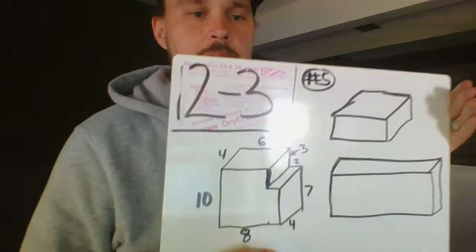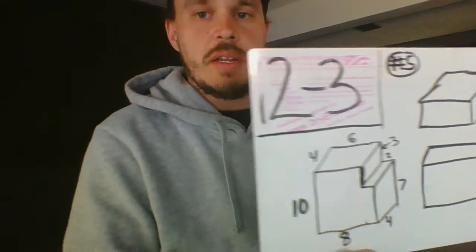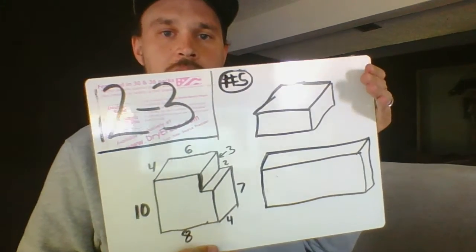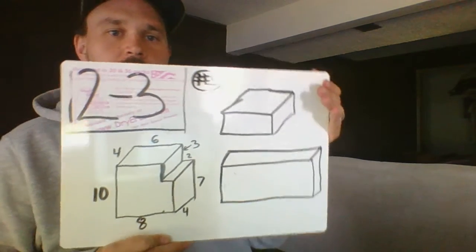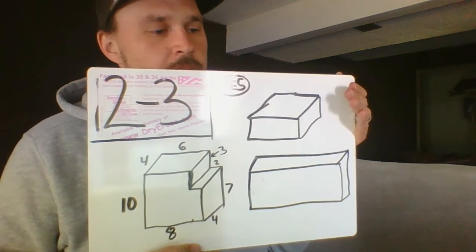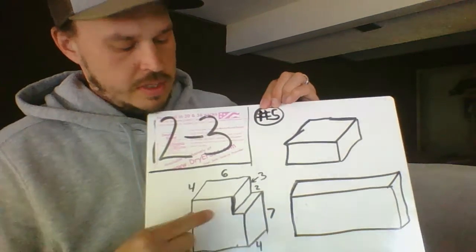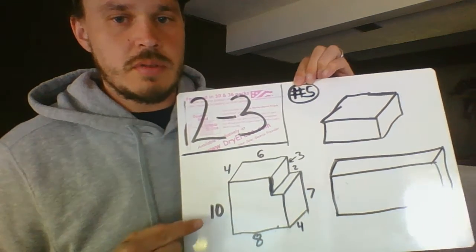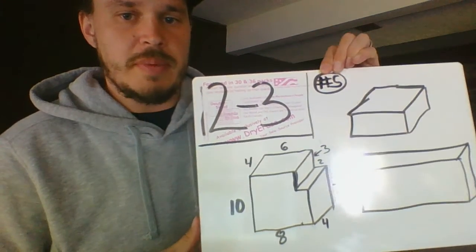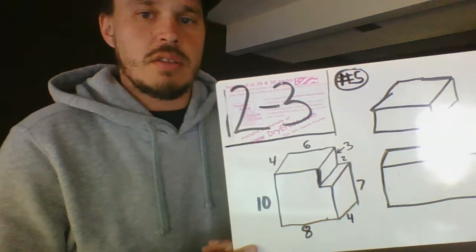Okay, this next problem is going to be problem number five from independent practice. That glare is still there, okay. So anyways, you see this problem in your book and these are all labeled with centimeters. So when you're doing your work you're always going to want to make sure to do that.